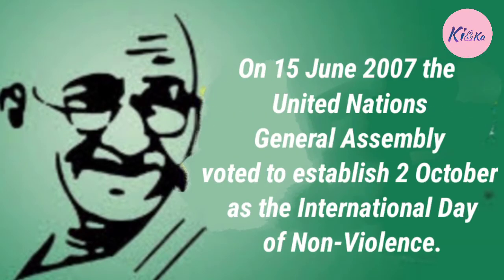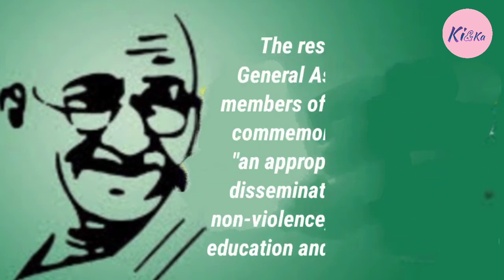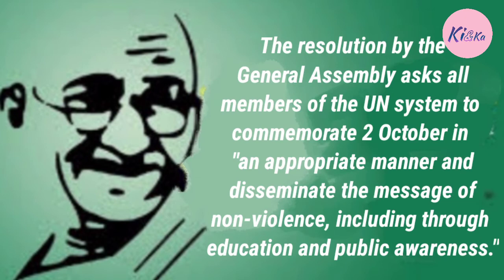On 15 June 2007, the United Nations General Assembly voted to establish 2 October as the International Day of Non-Violence. The resolution by the General Assembly asks all members of the UN system to commemorate 2 October in an appropriate manner and disseminate the message of non-violence, including through education and public awareness.